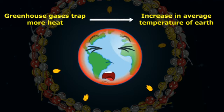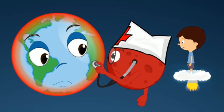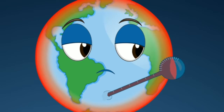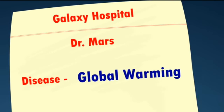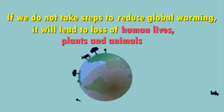Because of the greenhouse effect, the earth is becoming very hot — as shown in the animation where a boy calls the doctor to check on the earth. The thermometer is shown bursting because it is so hot. The thicker layer of greenhouse gases traps more heat, resulting in an increase in the average temperature of the earth. The earth becomes hotter and hotter — this is called global warming.